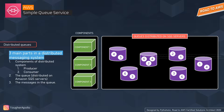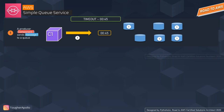Looking at these components, producers are the components that send messages to the queue, and consumers are the components that receive messages from the queue. There can be multiple producers and consumers. The queue holds messages stored redundantly across multiple SQS servers. SQS is a shared service used by multiple users simultaneously. Messages are stored redundantly across multiple Amazon SQS servers.